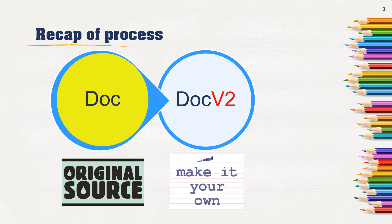Just to recap that in a more visual way: when I'm doing an assignment, I save a document with the original information from the Internet. As soon as I've saved that, I save as and call it the same name but version two — and that's where I do my rewording.